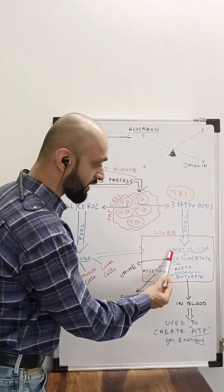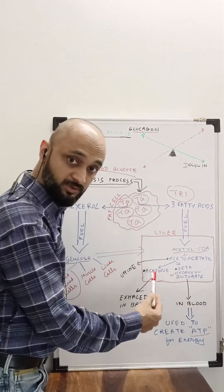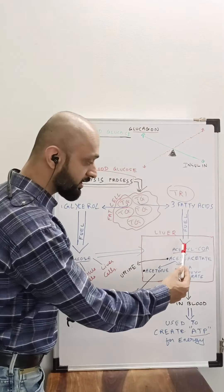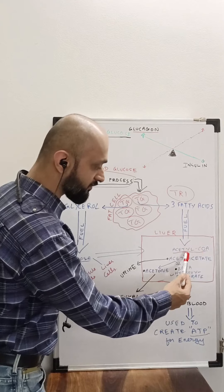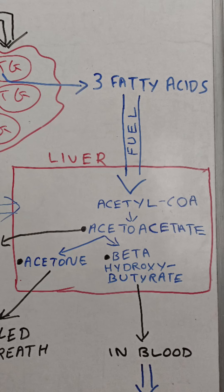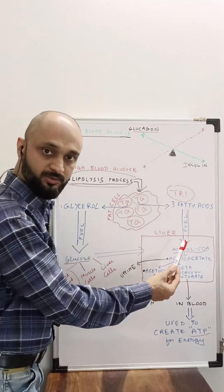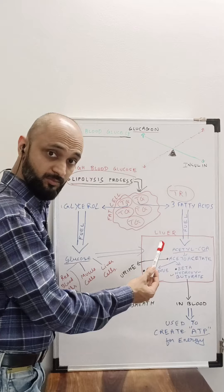First it gets converted into acetyl CoA, which is the basic base of those ketones, ketone bodies. After the acetyl CoA is converted, it becomes acetoacetate, acetone, and beta-hydroxy butyrate. These are the three molecules, three ketone bodies which our body creates from the fatty acids.